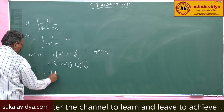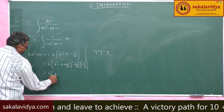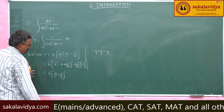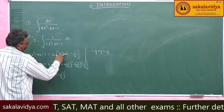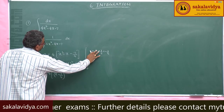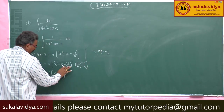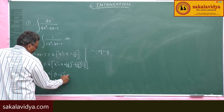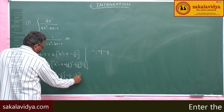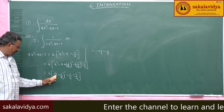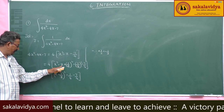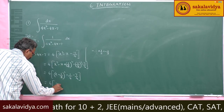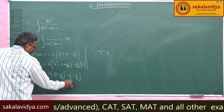This simplifies to 4 times [(x-1/2)²-1/4-7/4], which gives 4(x-1/2)²-2. The expression (x-1/2)² is a perfect square. So 4x²-4x-7 = 4(x-1/2)²-2.